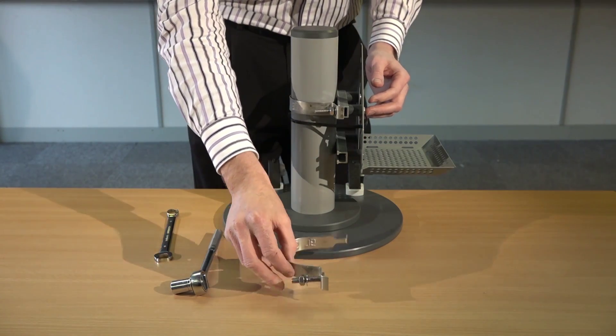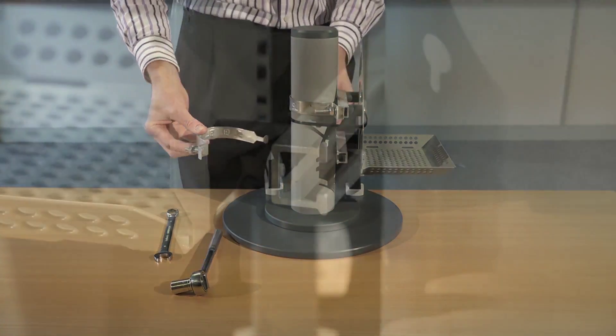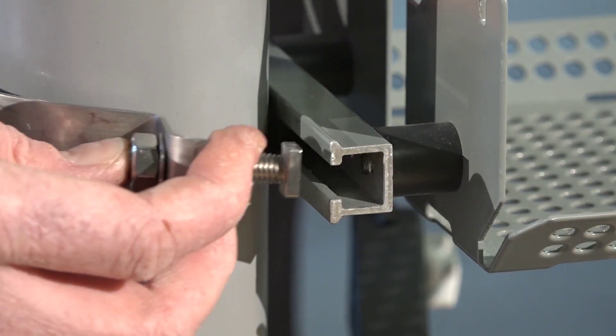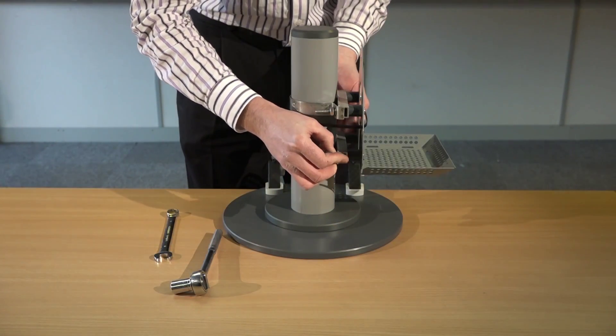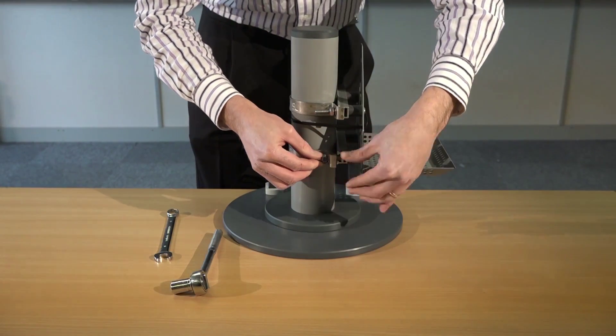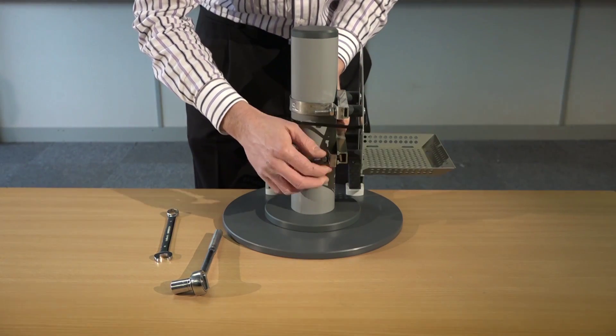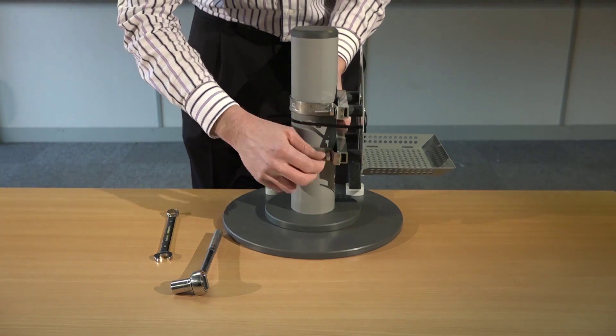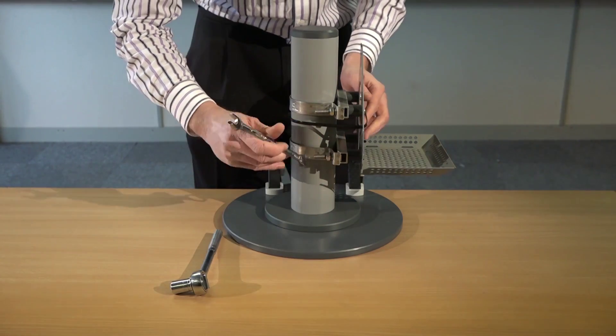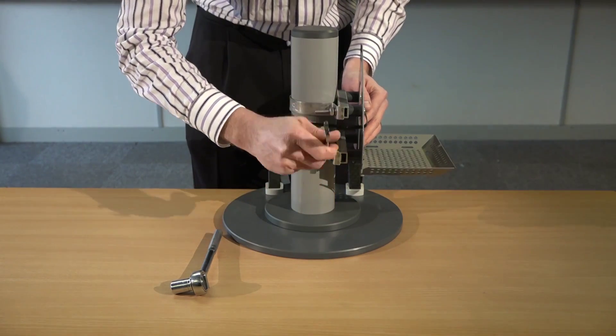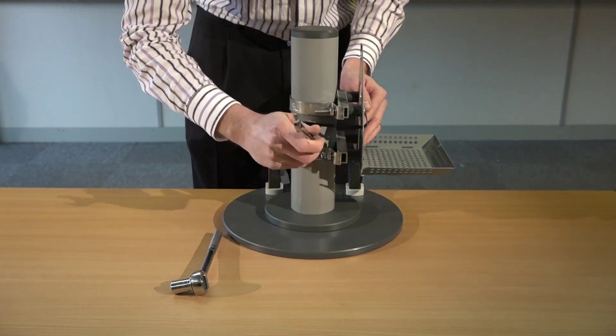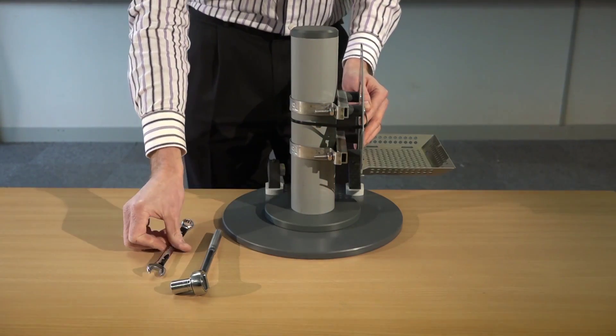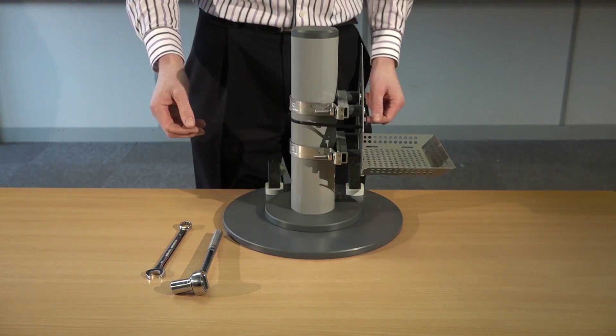Once secure, repeat the exercise with the second post clip, into the fixing channel, around and slotting into the fixing channel. Tighten by hand and secure with the spanner. Again, from this point, you can then move on to installing the pod.